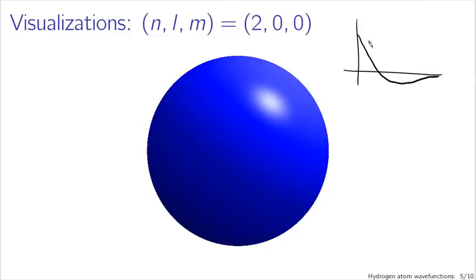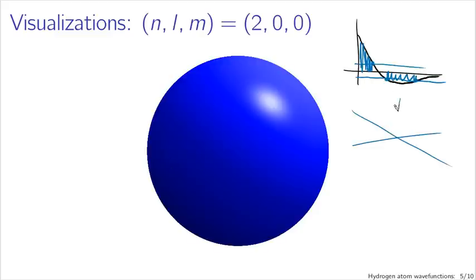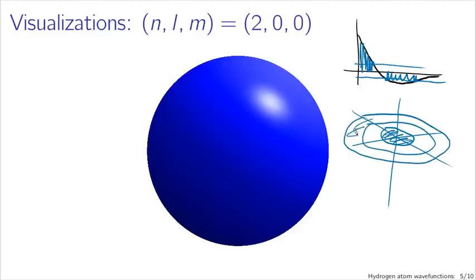So if we have some threshold above which we consider the particle likely to be found, we actually have two regions where the probability is above threshold — inside and outside. If I slice this in half and draw a coordinate system, I would have some internal region and some external region where the particle is likely to be found: two concentric spherical regions. These are not disks of course — these are spheres.